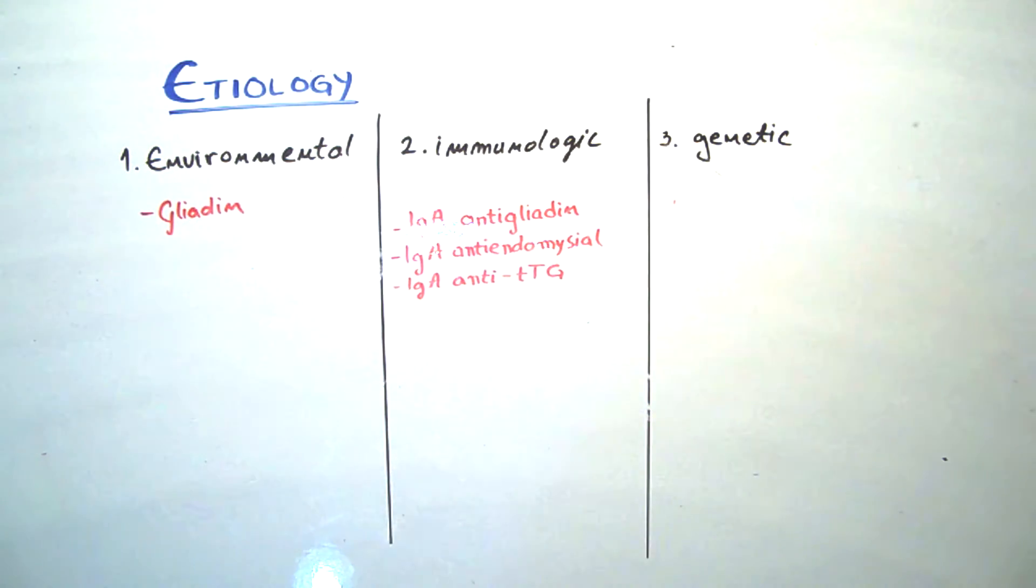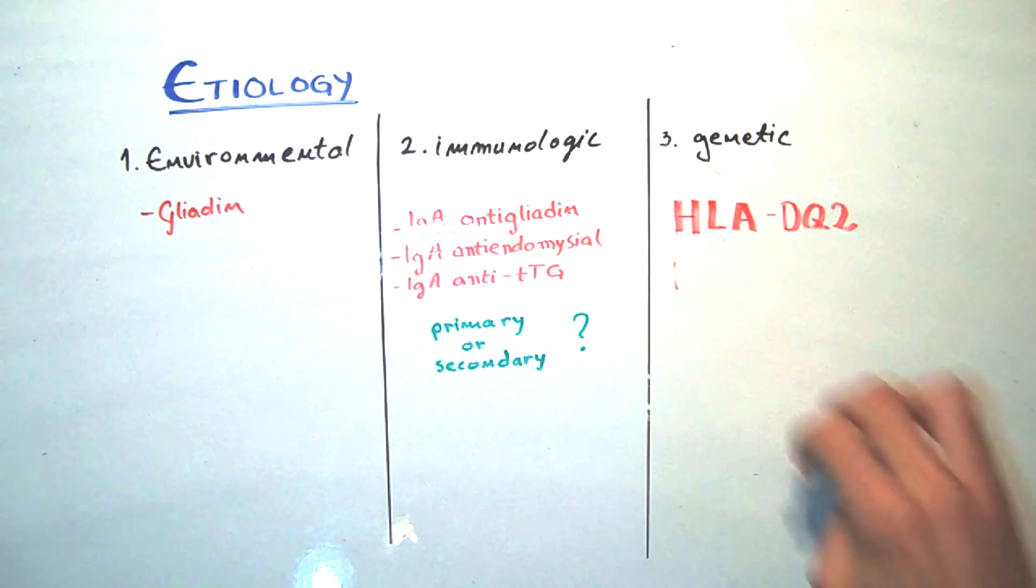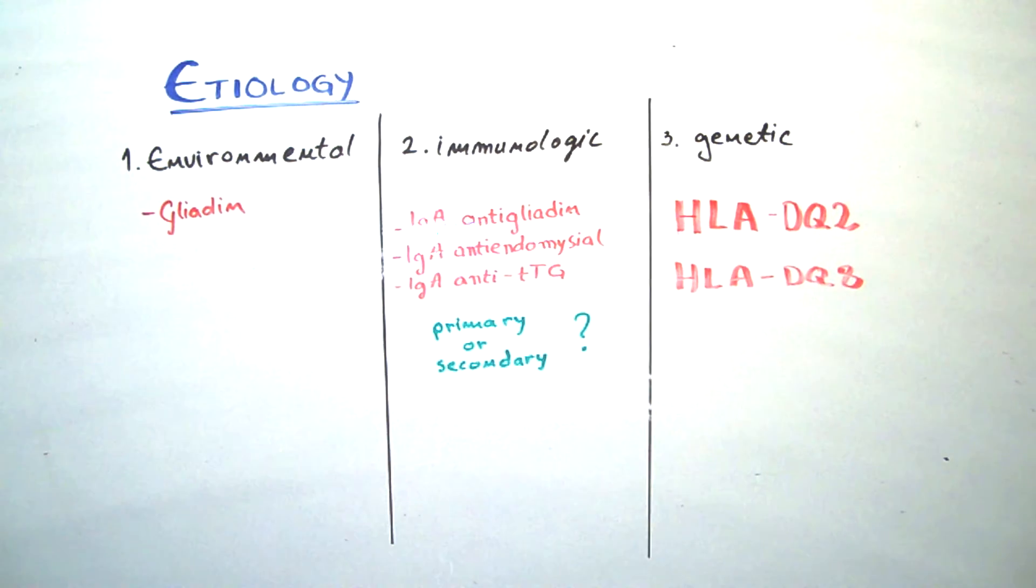However, it is not known whether such antibodies are primary or secondary to the tissue damage. Genetics also appear to be involved in the celiac disease. Almost all patients with celiac disease express HLA-DQ2 allele, but only a minority of people which express this allele have celiac disease.